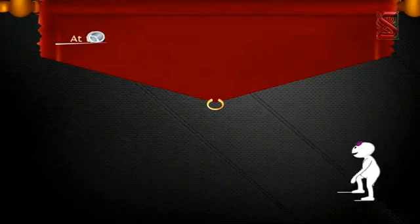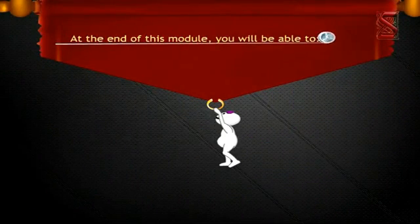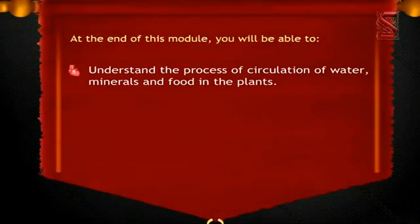By now you know everything about the human circulatory system. Now think about this: do plants also have a system of transporting food and water like us? Of course they do. Let's learn more about it. At the end of this module, you will be able to understand the process of circulation of water, minerals, and food in plants.